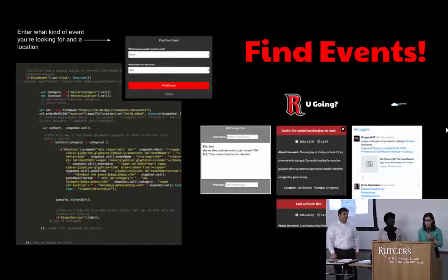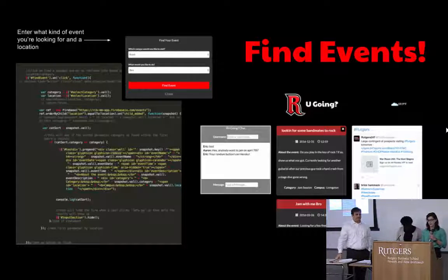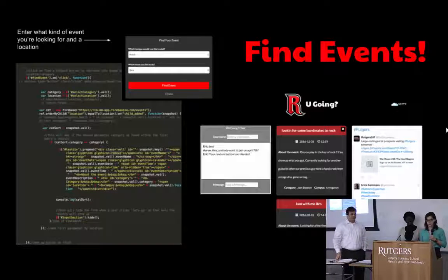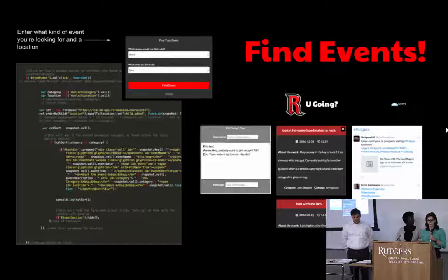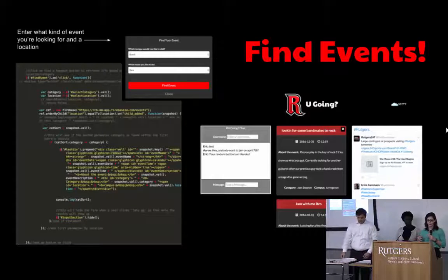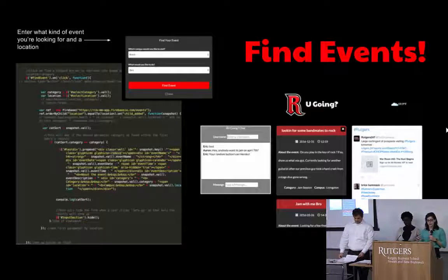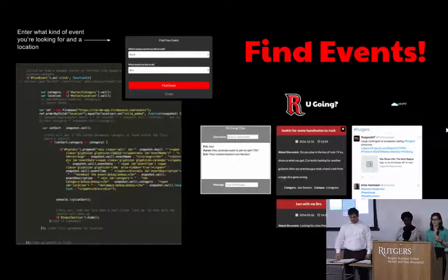So I handled the find event and search event functions. So what these would do is if you wanted to find an event, the modal would pop up and they would enter the kind of event they're looking for and the location. From there, it would activate a click function which would call the Firebase. It would capture the values of what the person entered as the location, the category. And then first you'd run a query that would search for location and bring back all the results that had the location that matched the user input.